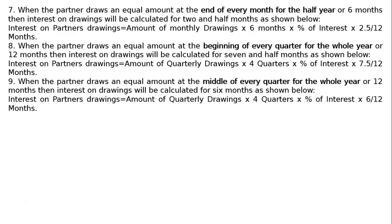The ninth rule: when the partner draws an equal amount at the middle of every quarter for the whole year or 12 months, then interest on drawings will be calculated for 6 months. Interest on partner's drawings equals amount of quarterly drawings multiplied by 4 quarters multiplied by percentage of interest multiplied by 6 upon 12 months.